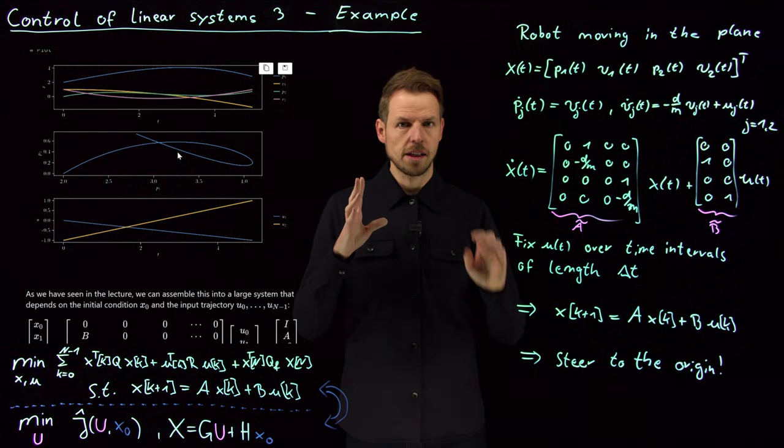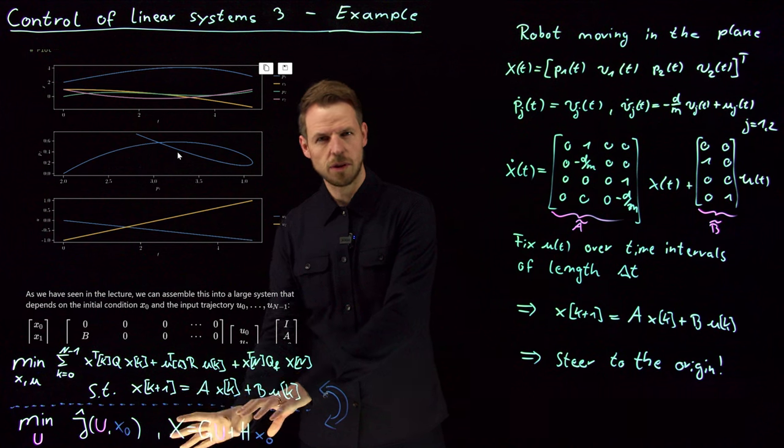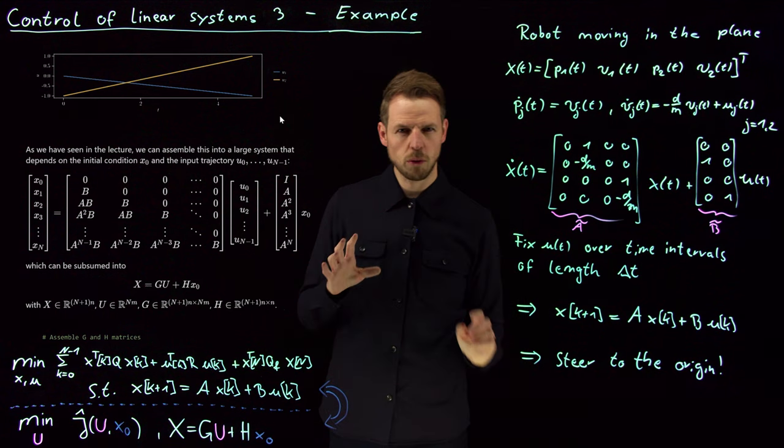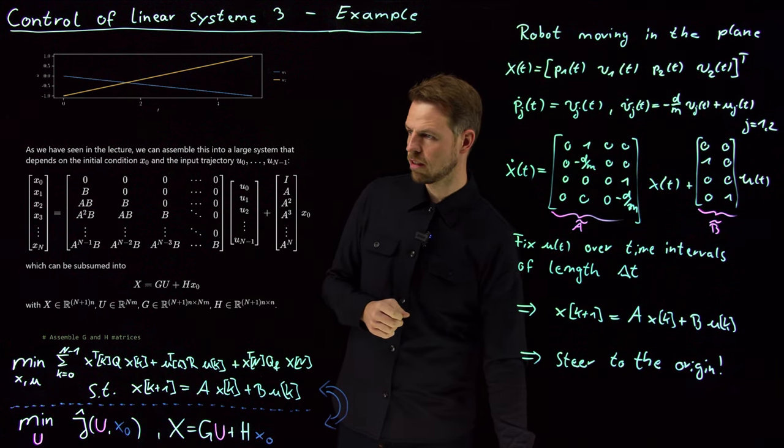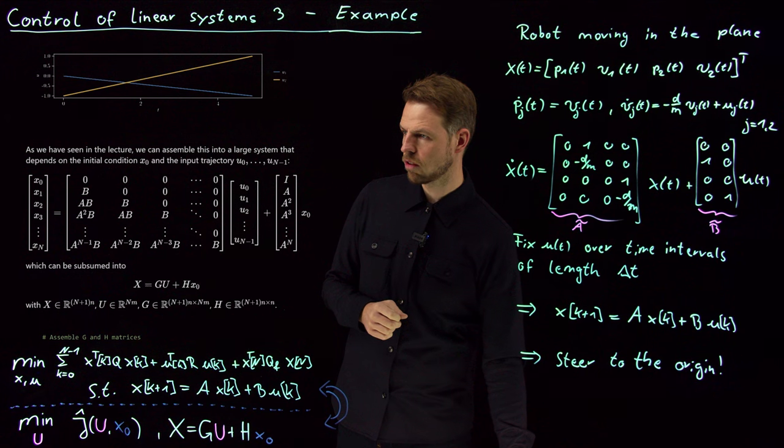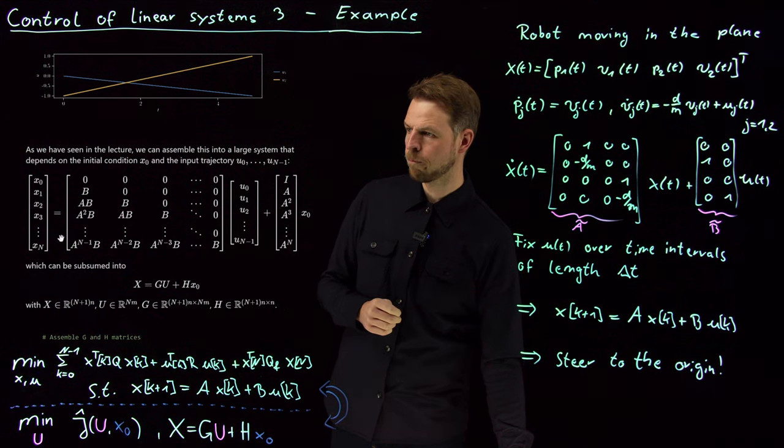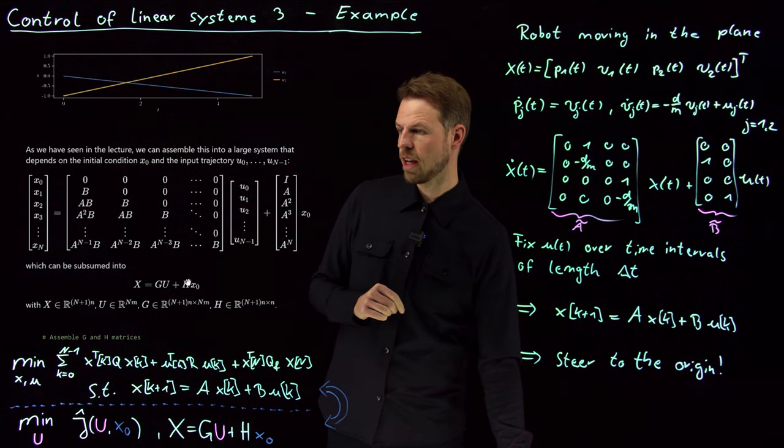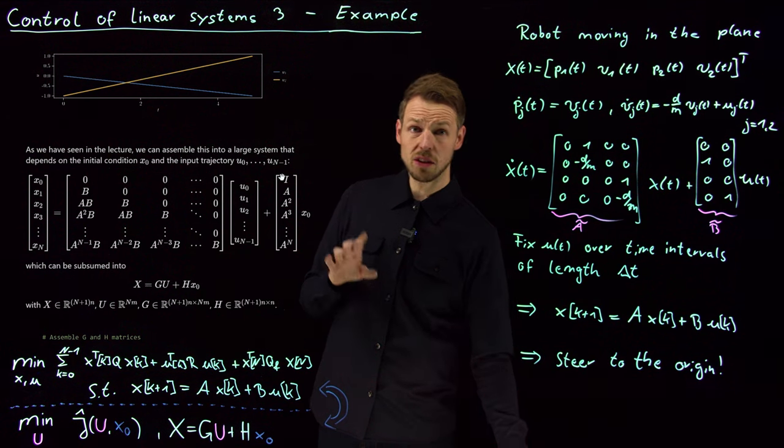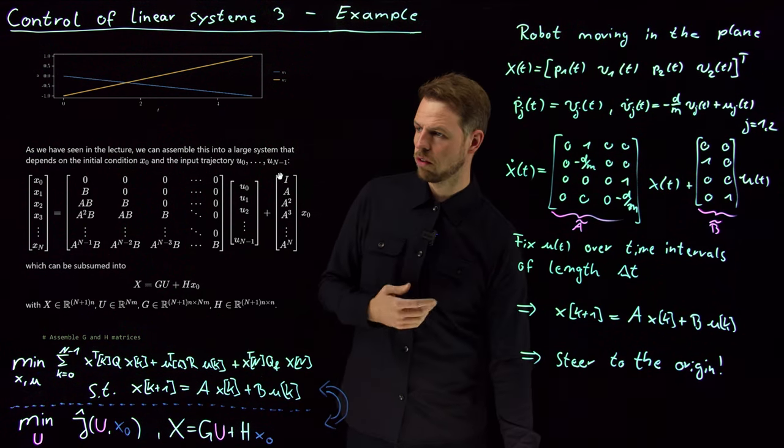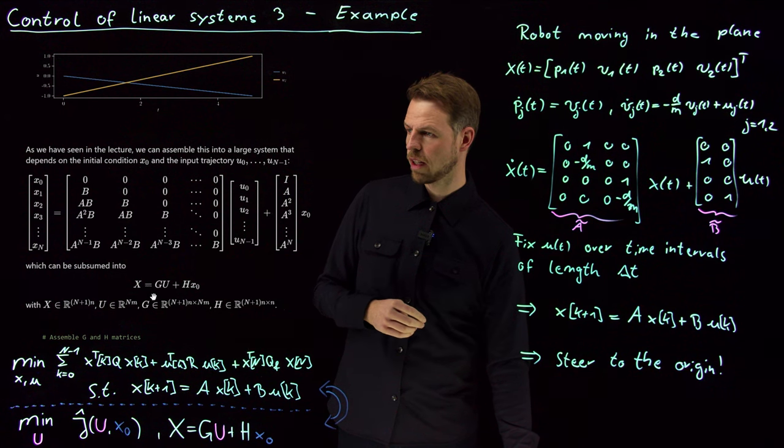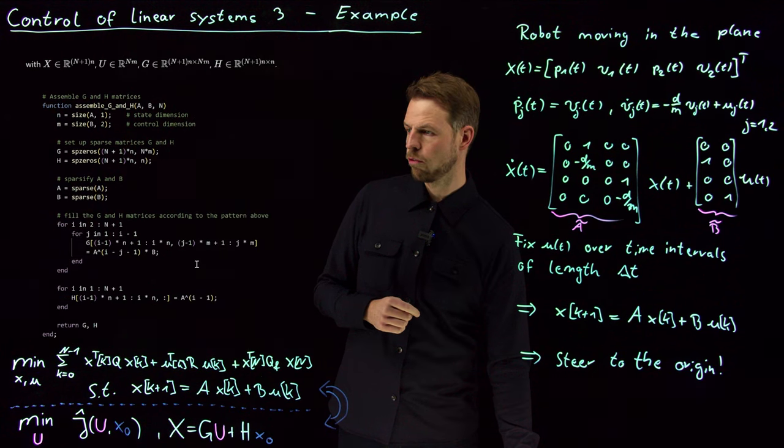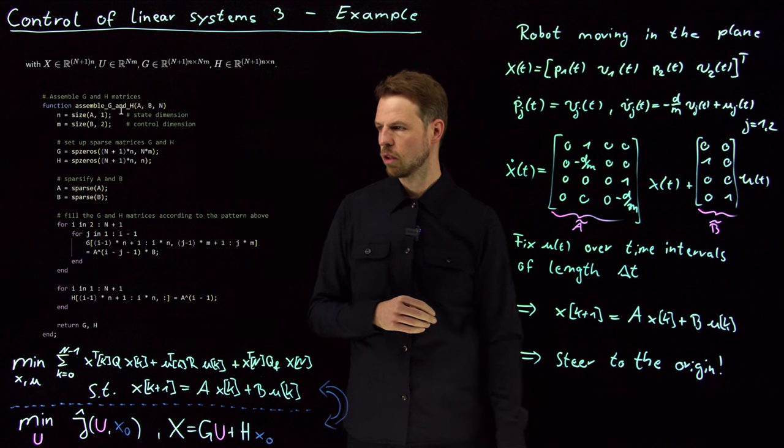What we can do now is we can do the state transition or the reformulation. So what you see here, this is exactly what we have derived in the previous video. Our big X is this concatenation of these states X from times 0 to X_N and what we get is this huge matrix G times U plus H times X_0 just as you see it here. This is exactly how we defined or developed this recursive law. So what we get is X equals G times U plus H times X_0.